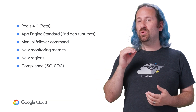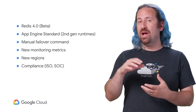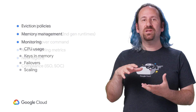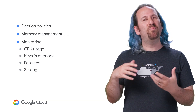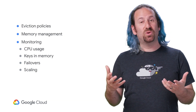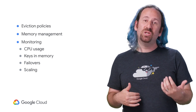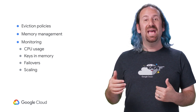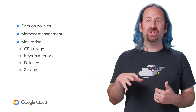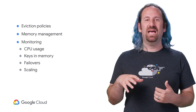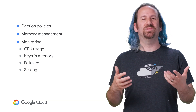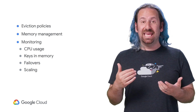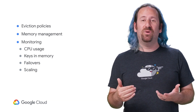In addition to a live demo showing how simple it is to set all of this up, the talk goes over some best practices for storing data, eviction policies, and memory management, and then a breakdown of what to monitor from Stackdriver — things like CPU usage and alerts, keys present in memory, failovers, and how to best scale based on growth.